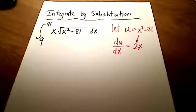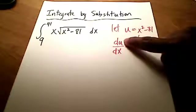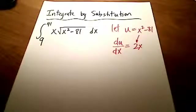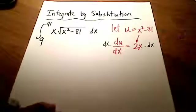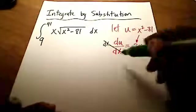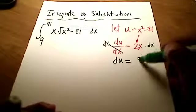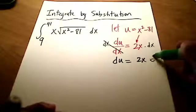Let's do one more thing. Let's get this du up here by itself. And so I'm going to multiply both sides by dx. If I multiply both sides by dx, these guys cancel out, and I'm left with du is equal to 2x dx.